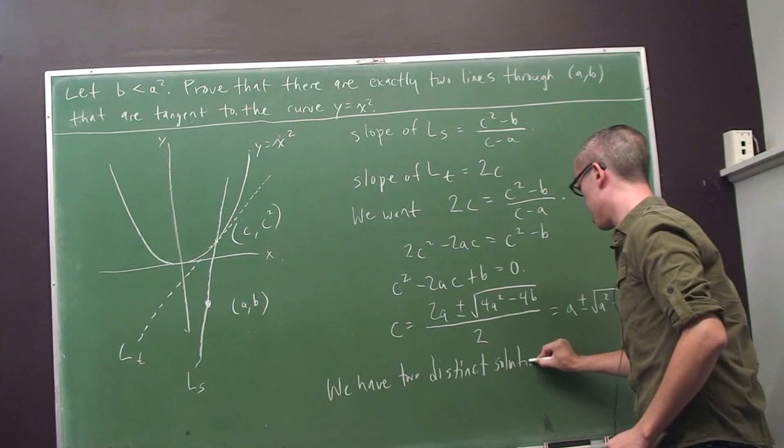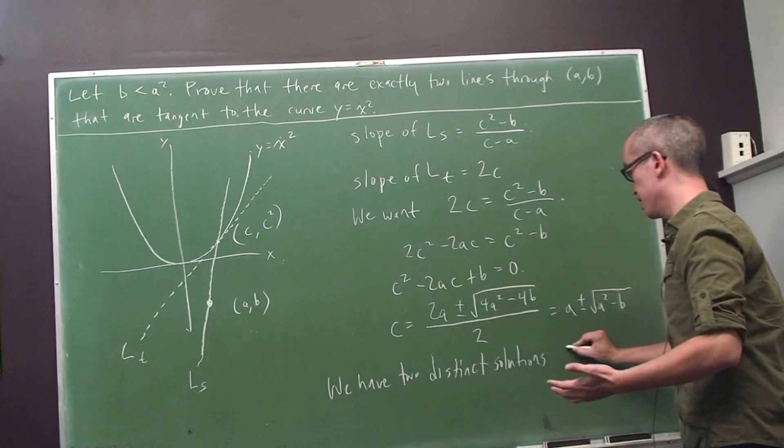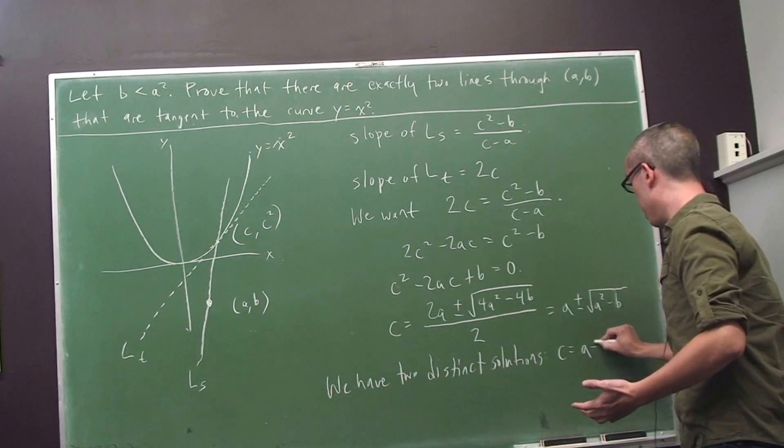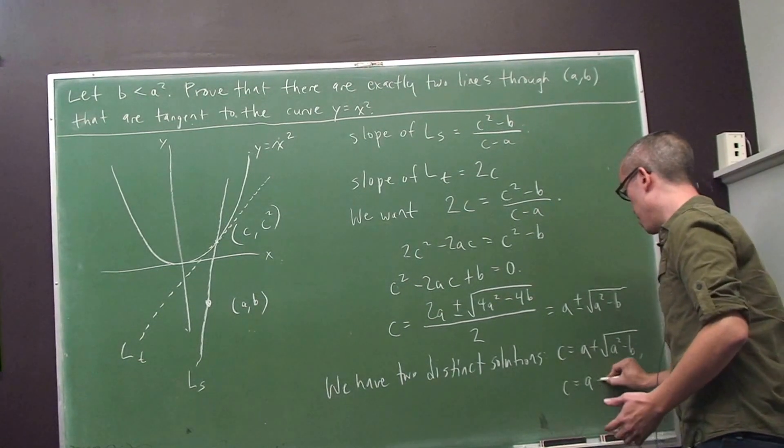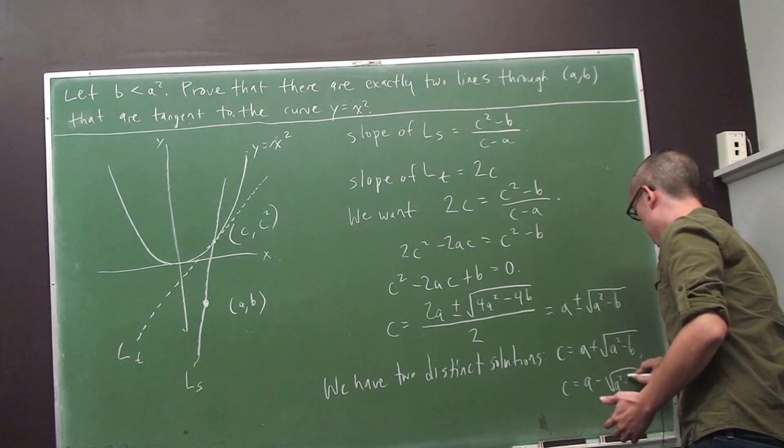We have two distinct solutions. The first one is c equals a plus √(a² minus b), and the second is c equals a minus √(a² minus b).